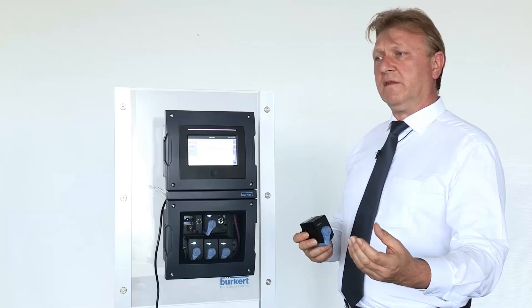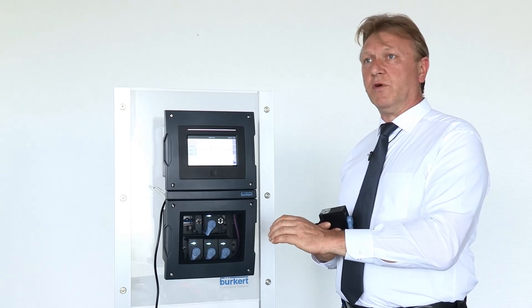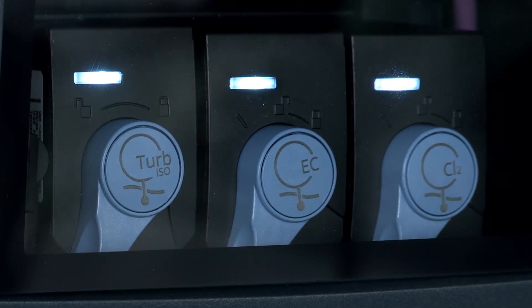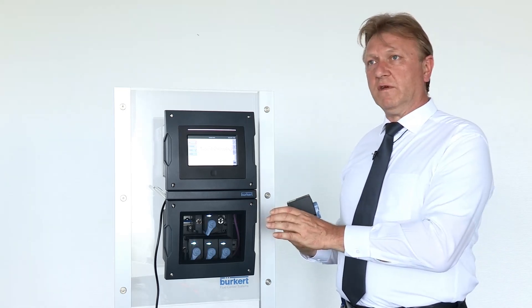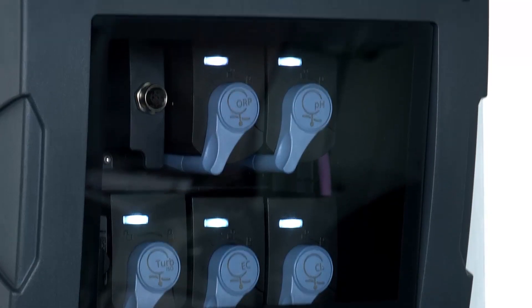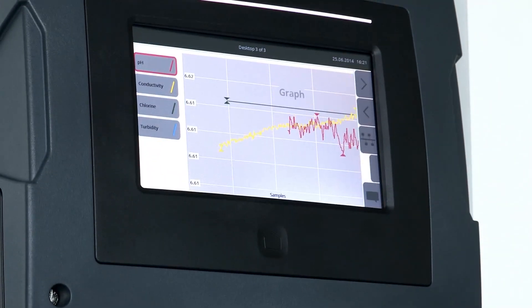If I measure the turbidity at the beginning of a filtration process and at the end of a filtration process I can monitor the efficiency of the filtration. This would be two measurement cubes at the start of the process and two cubes at the end of the process, each on a separate backplane and connected just by the internal bus system to one display.